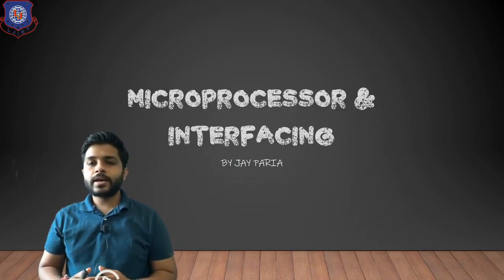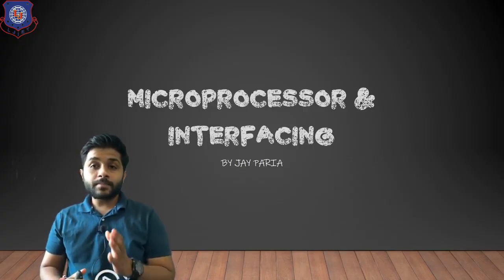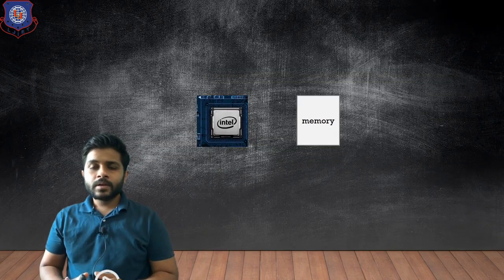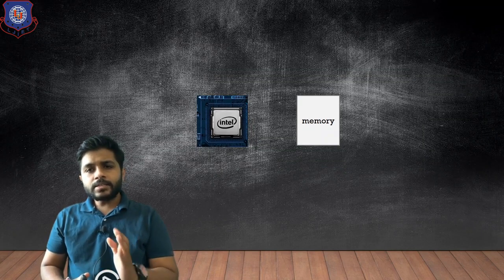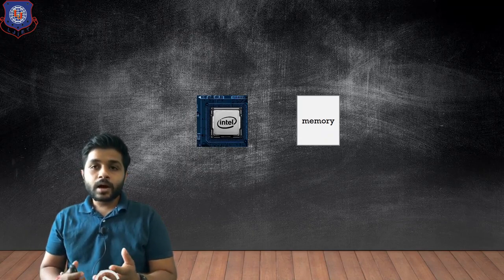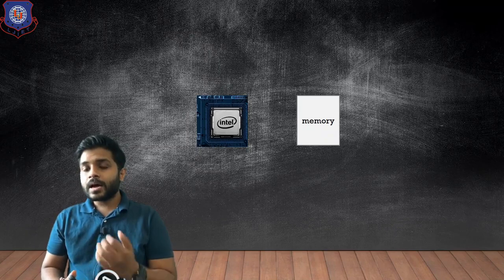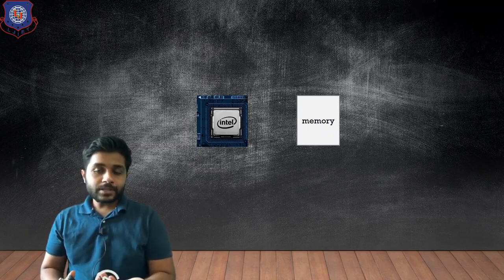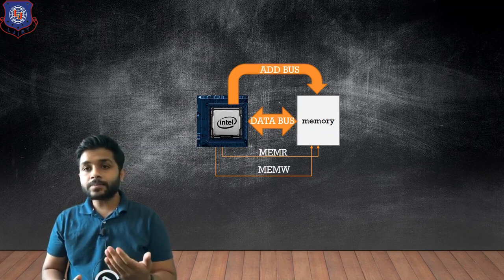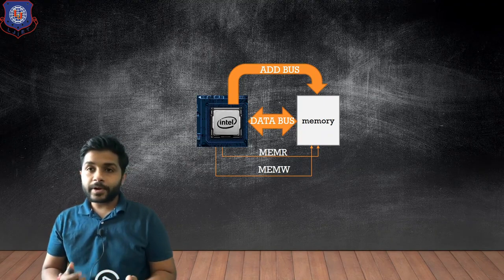Hi everyone, I'm Jay and today we are going to see the difference between Memory Mapped I/O and I/O Mapped I/O. Before going to see that, let's first see how to interface memory with the microprocessor. To interface memory with the microprocessor, I need different buses and some control signals — the address bus, the data bus, and the control signals memory read and memory write.